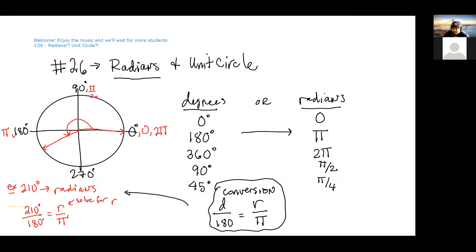How do we solve for r here? We're going to cross multiply. First we get 210 degrees times pi equals 180 times r.